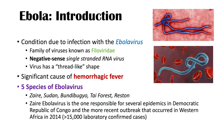Zaire Ebola virus is by far the most important and is responsible for several epidemics in the DRC, or Democratic Republic of Congo, as well as the more recent outbreak in Western Africa in 2014, where there were greater than 15,000 laboratory-confirmed cases. Zaire Ebola virus is the one to remember.